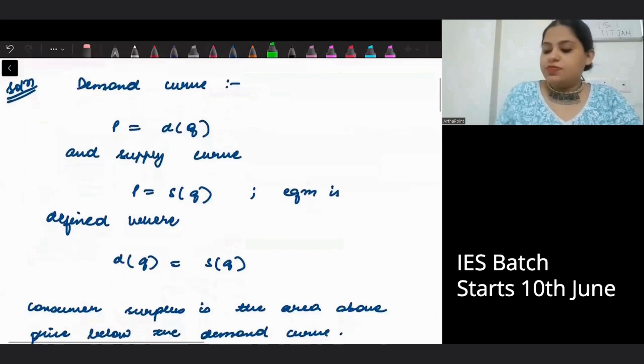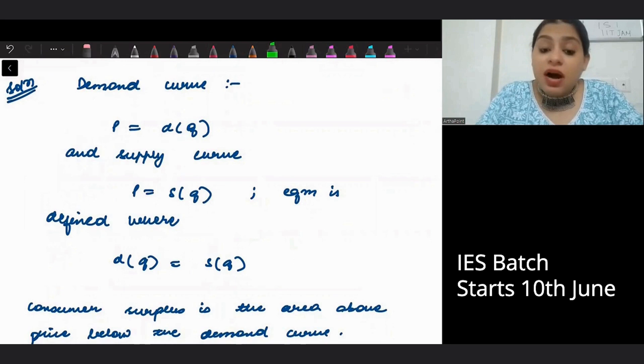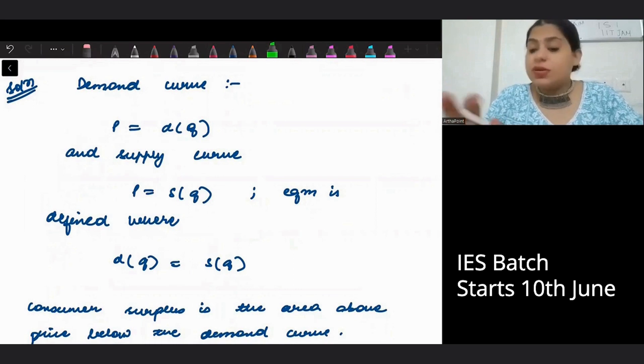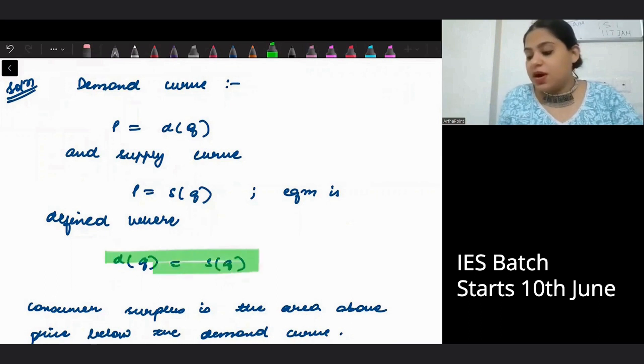Now, remember that what is a demand curve? A demand curve basically represents the relationship between price and quantity demanded. Similarly, a supply curve is also defining the relationship between price and quantity supplied. Equilibrium is defined where demand is equal to supply.